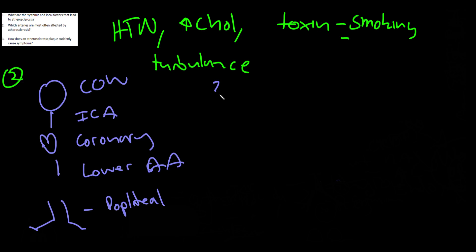Part 3. How does an atherosclerotic plaque suddenly cause symptoms? So the key thing for this is rupture or erosion ulceration, and that can lead to a thrombus or thrombosis or embolism.